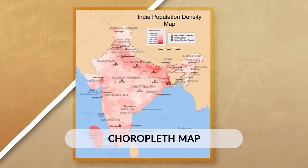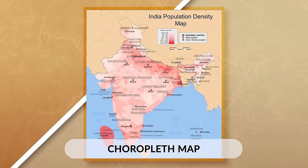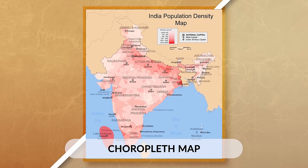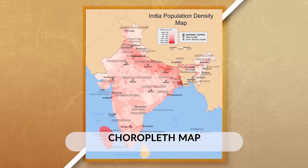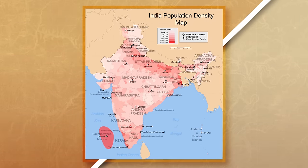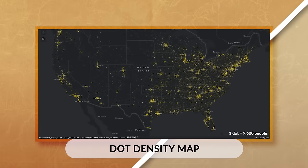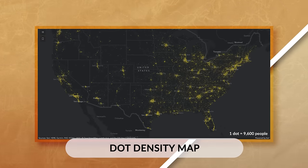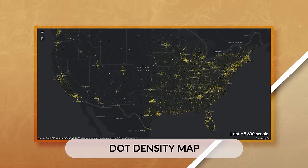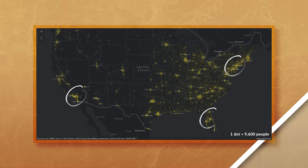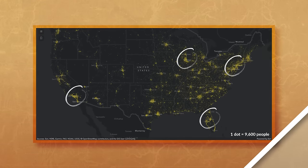Throughout AP Human Geography, you will see a variety of different thematic maps. Choropleth maps display data by using different colors or different shades of colors, with each color or shade showing a different quantity of the data set. Dot density maps show data by placing points on a map where the data is occurring. This allows the reader to see the spatial distribution of data, but can be confusing if the data is clustered together.